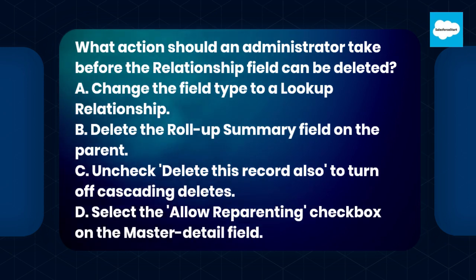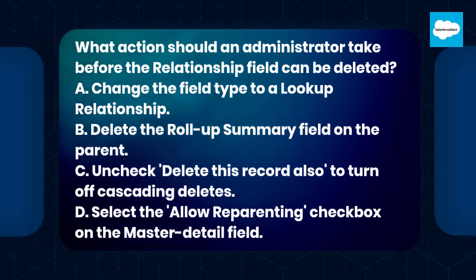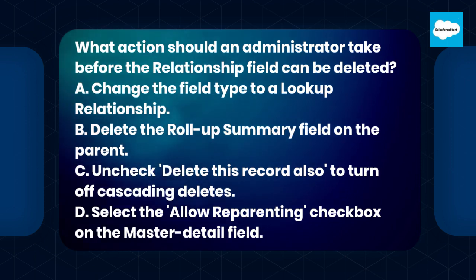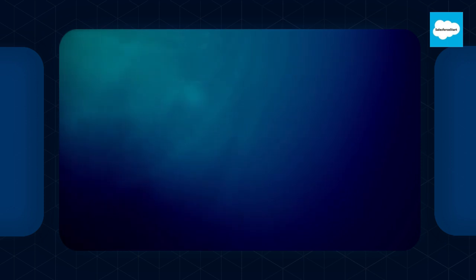a. Change the field type to a lookup relationship. b. Delete the roll-up summary field on the parent. c. Uncheck 'delete this record also' to turn off cascading deletes. d. Select the allow reparenting checkbox on the master detail field.